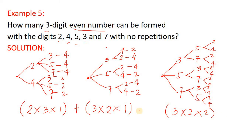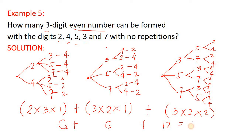Getting the sum of all combinations: 2 times 3 times 1 is 6, plus 3 times 2 times 1 is also 6, plus 3 times 2 times 2 is 12. The total is 24. So going back to the question — how many 3-digit even numbers can be formed with the digits 2, 4, 5, 3, and 7 with no repetitions — the answer is 24.